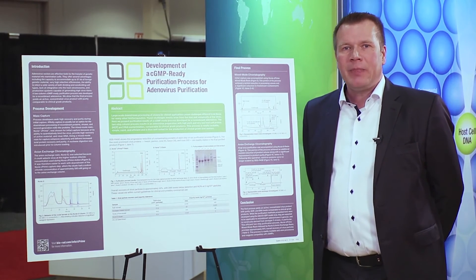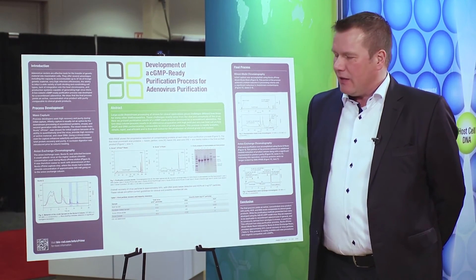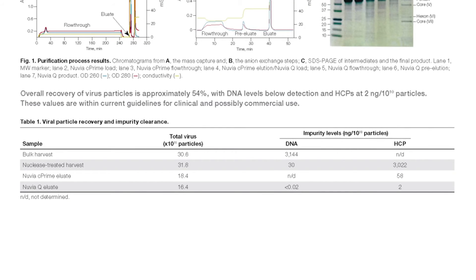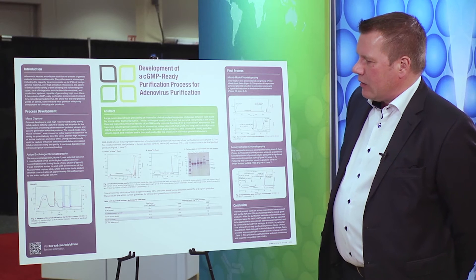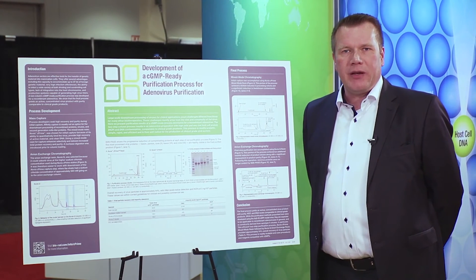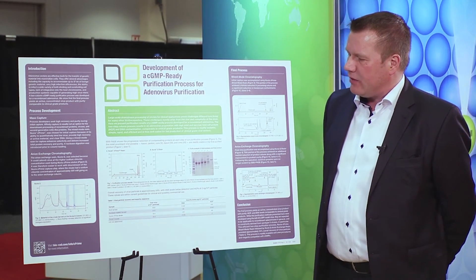We analyzed the total viral count, which is a parameter for the virus concentration in the material. We've also been quantifying residual DNA and host cell protein. As outlined in the table, Nuvia C Prime is capable of doing a very efficient reduction of these two contaminations, while the subsequent Nuvia Q step brings the DNA levels down below the detection limit and the host cell protein concentration to a level in compliance with requirements from federal regulators.